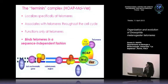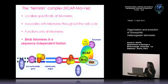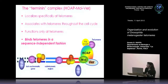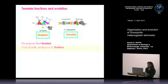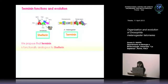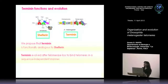To summarize our ideas on Drosophila telomeres: there are several proteins essential for telomere maintenance located at telomeres, like the MRN complex, heterochromatin protein 1, and many others, but these proteins also have other functions in the cell. While the Terminin complex — formed by HipHop, MOI, and VER — is specifically localized at telomeres, associated throughout the cell cycle, and appears to function only at telomeres. Its key feature is that it binds telomeres in a sequence-independent fashion. We can conclude that Terminin is functionally analogous to shelterin, and that Terminin evolved after telomerase was lost in Drosophila to bind telomeres in a sequence-independent manner.